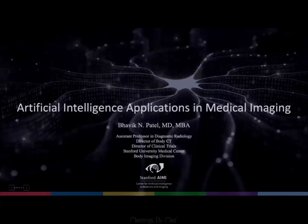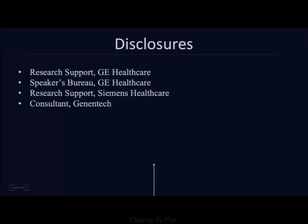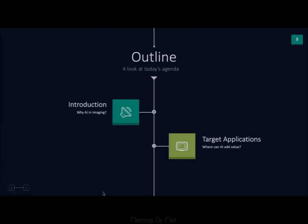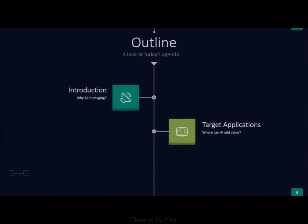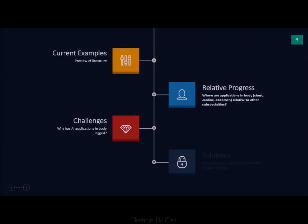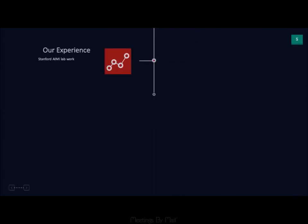It's always a pleasure to have the opportunity to speak at this meeting. Here are my disclosures. For the next 15 minutes, we'll cover an introduction on why AI and imaging, target applications where AI can add value, current examples, and the relative progress of applications in body — including chest, cardiac, and abdomen — relative to other subspecialties. We'll discuss challenges, solutions, and I'll draw from my experience at the Stanford Artificial Intelligence Medical Imaging Lab.